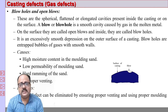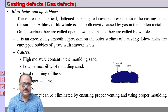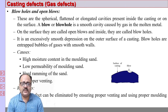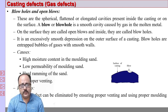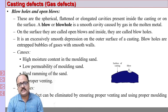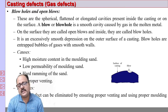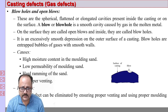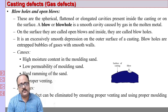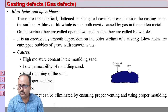Blow holes occur due to excessive moisture in the sand. If there is excessive moisture and very low permeability, the gases evolved from the moisture — the steam that forms — cannot find ways to escape. It gets entrapped in the casting, resulting in a defect called blow holes, open blows, or simply blows. This can happen at the surface or inside the casting. Blow holes are very smooth and normally spherical in nature.